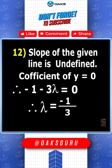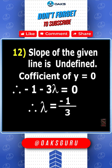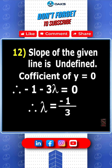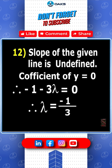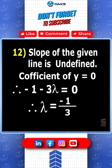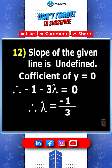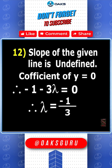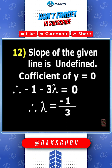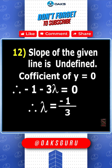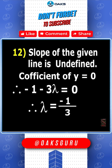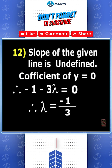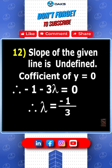What is your answer? The given line is parallel to the y-axis. Therefore, its slope is undefined. Hence, minus 1 minus 3 lambda equals 0. Therefore, lambda equals minus 1 by 3.